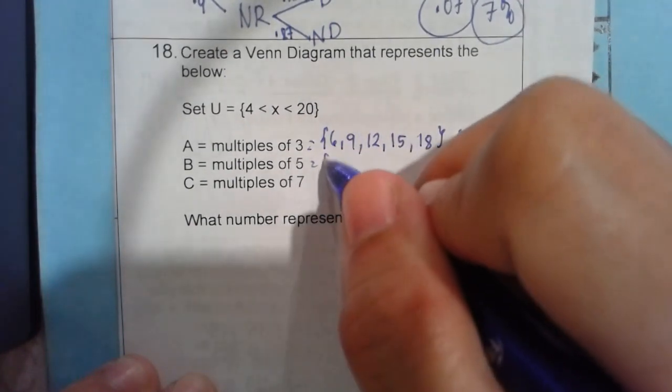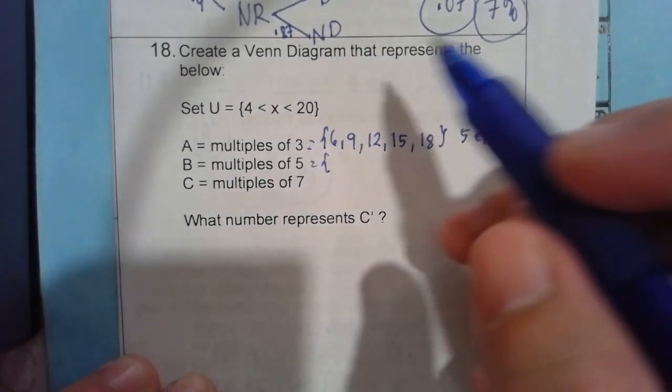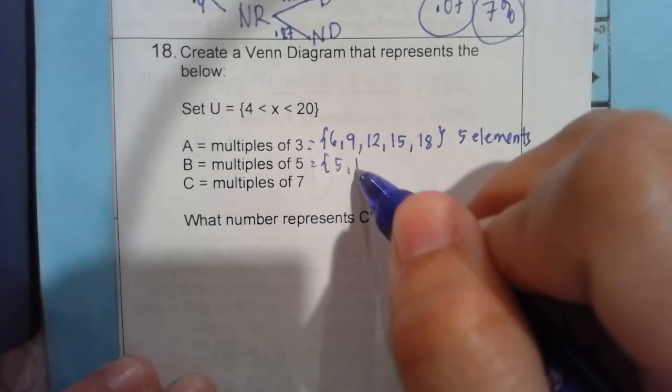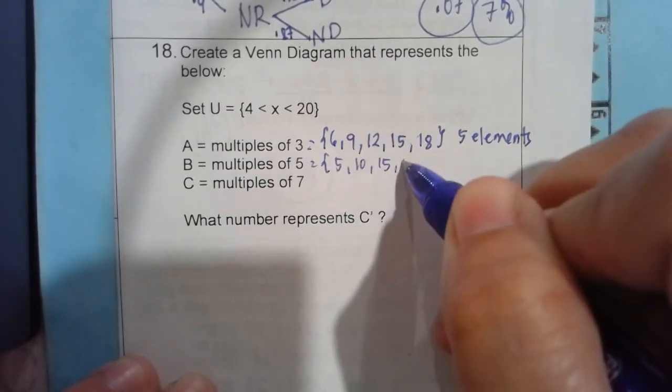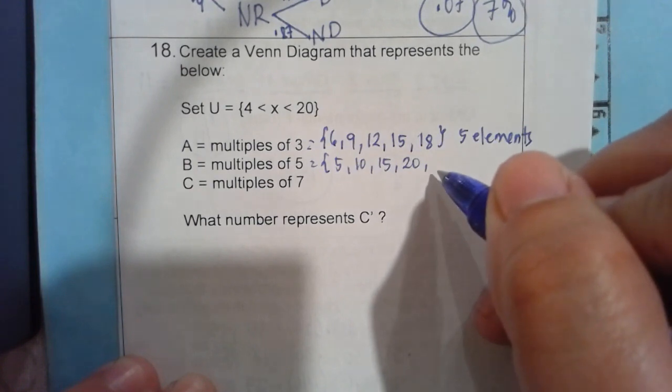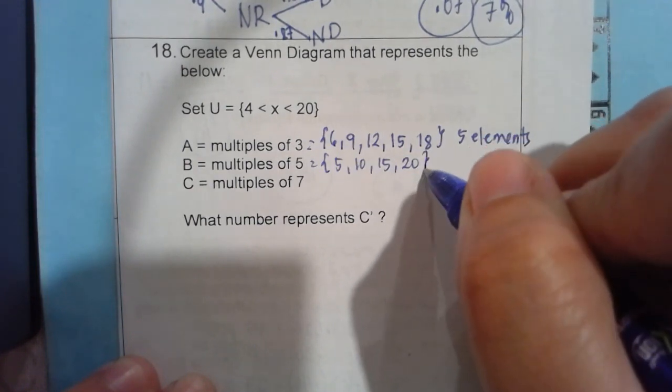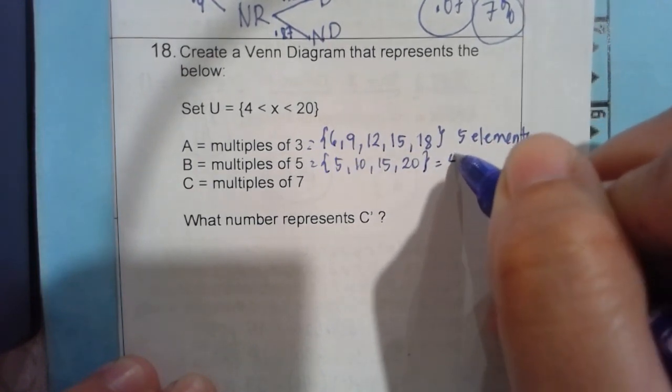For the one that says multiples of 5, we can start at 5, 10, 15, 20. That's it. So we have 1, 2, 3, 4 elements.